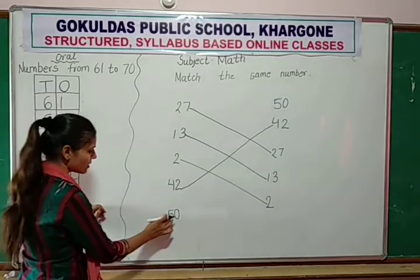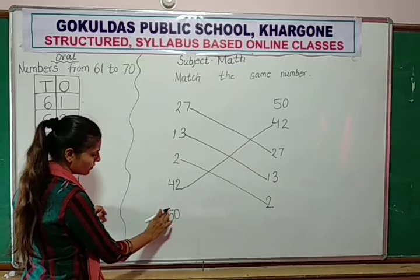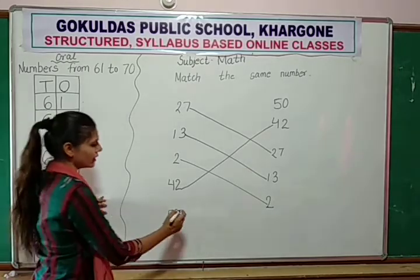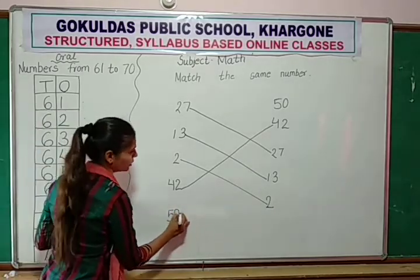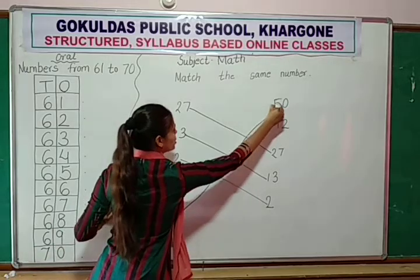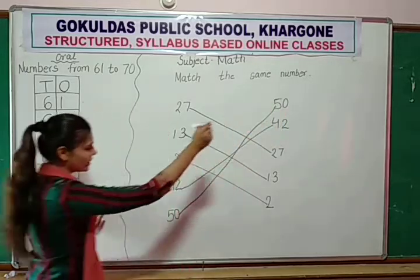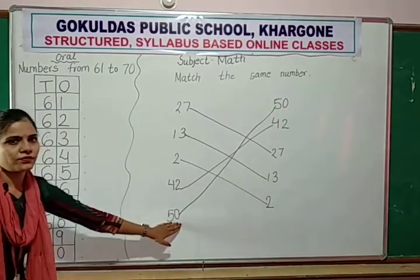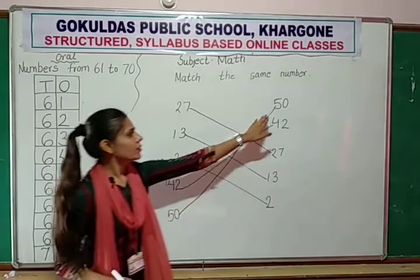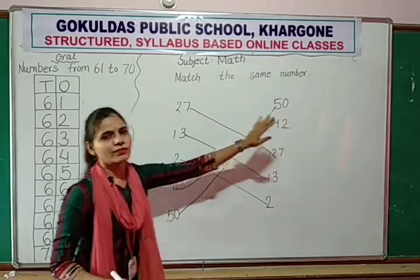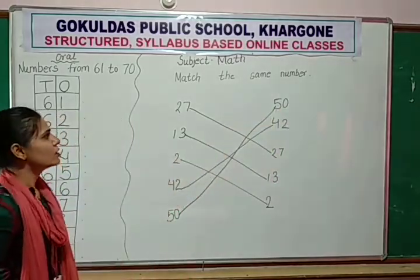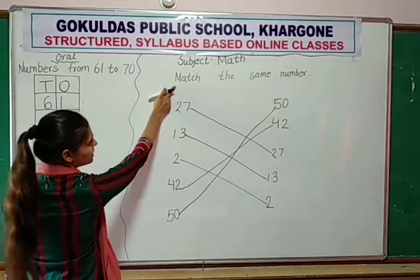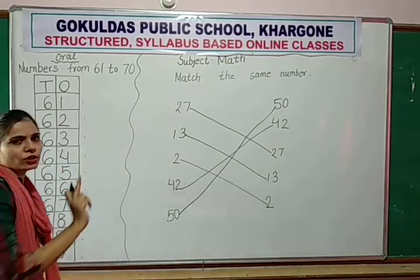Now next: 50. So where is 50? On the top. So you match same numbers. 50. The question is match the same numbers.